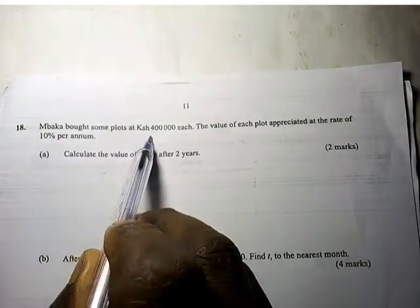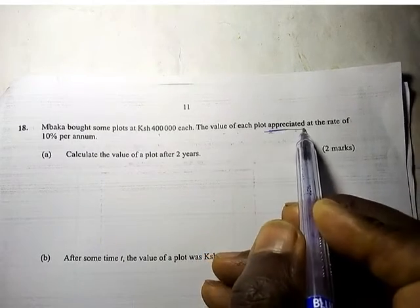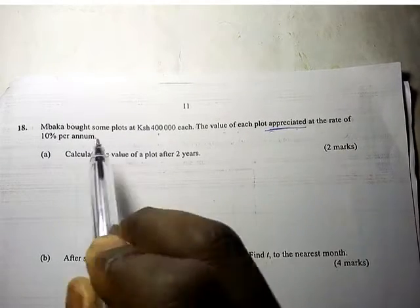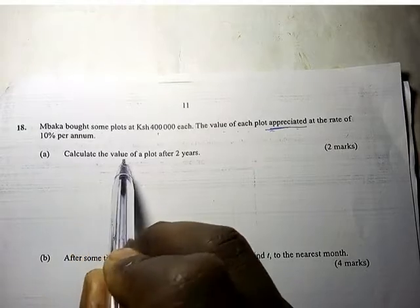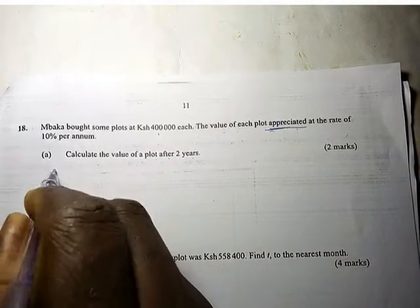Mbaka bought some plots at Kenya shillings 400,000 each. The value of each plot appreciated at the rate of 10% per annum. Calculate the value of the plot after 2 years. To appreciate, we use amount equals P principal into 1 plus R over 100 raised to power n.